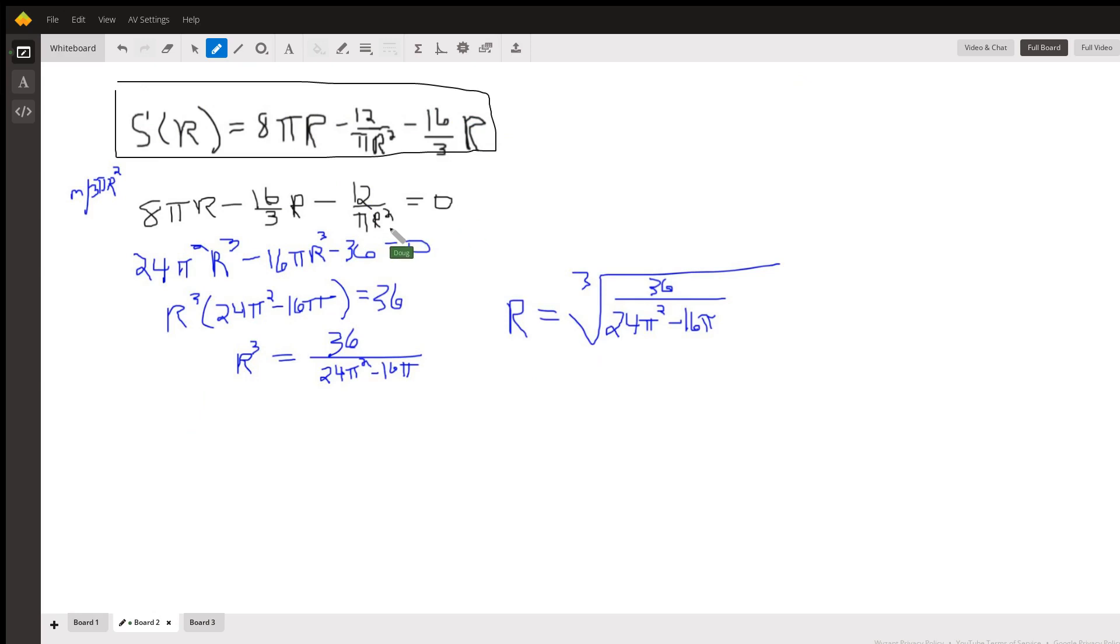Probably the easiest way to solve for r is to clear this equation of fractions, so I chose to multiply by 3πr² to clear the equation of fractions. That's what you get here. Take the 36 to the other side and factor out the r³, then divide by the coefficient of r³. Finally, take the cube root of that expression.